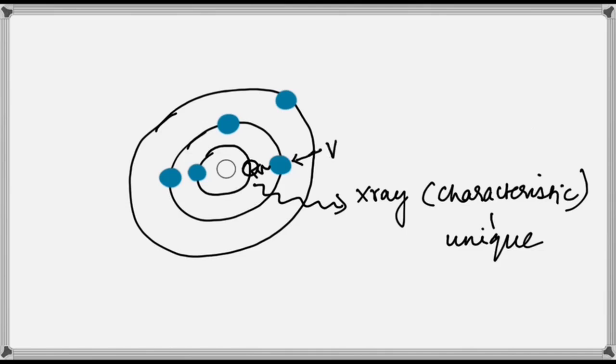This process creates a vacancy in the L-shell, and the process can repeat. Characteristic X-ray emission is represented by two letters.